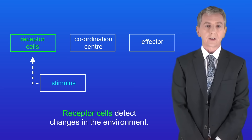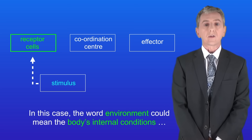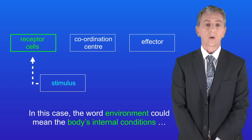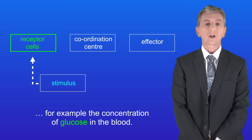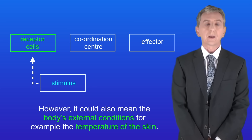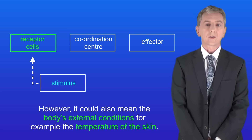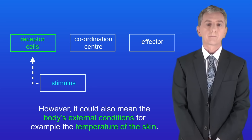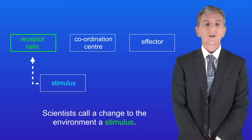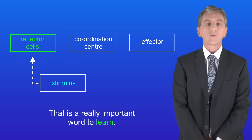Receptor cells detect changes in the environment. In this case the word 'environment' could mean the body's internal conditions — for example the concentration of glucose in the blood — or it could mean the body's external conditions, for example the temperature of the skin. Scientists call a change to the environment a stimulus, and again that's a really important word to learn.